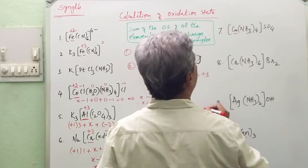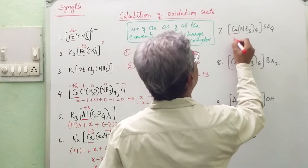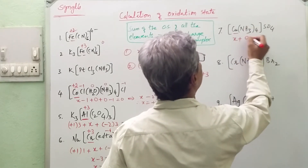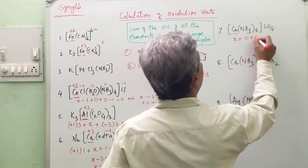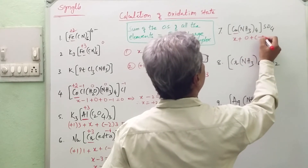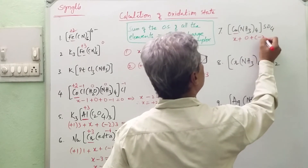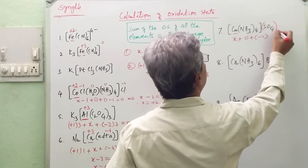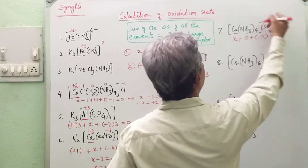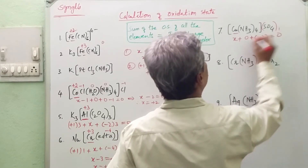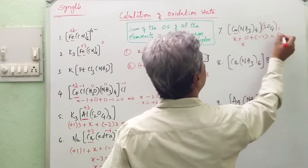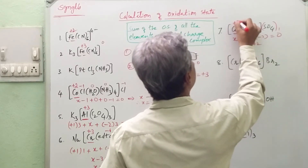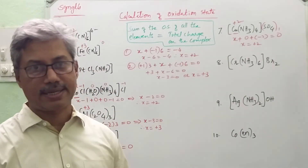The oxidation state of copper has to be calculated. Let it be x. Ammonia is a neutral ligand, so 0 × 4 = 0. Plus the charge on sulfate is minus 2, appearing once. The total charge on this complex is 0. This means: x − 2 = 0, therefore x = +2. Copper is in the +2 oxidation state.